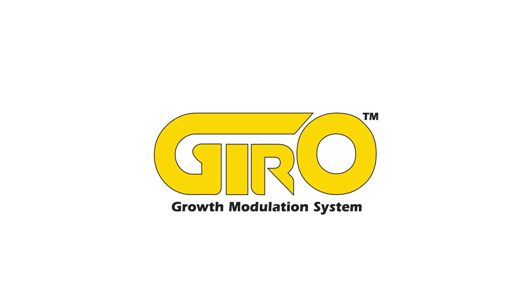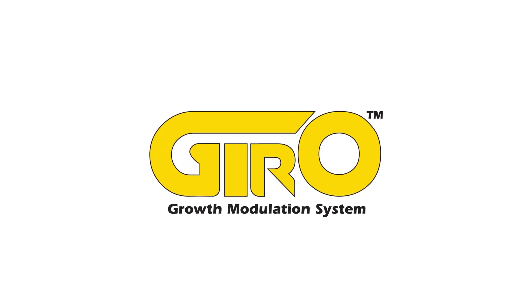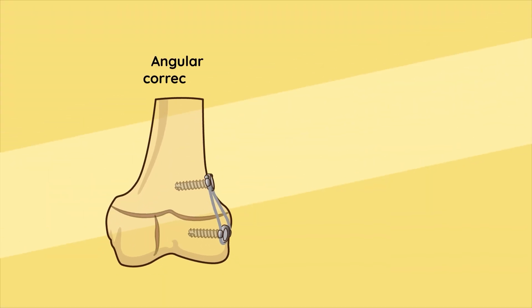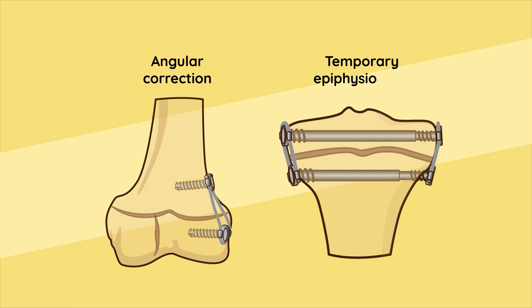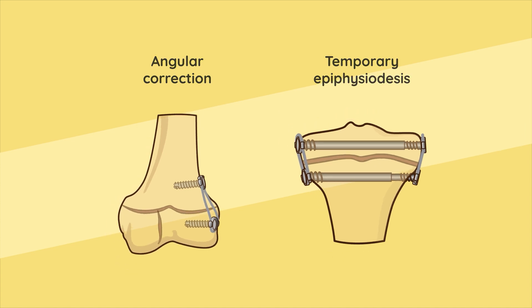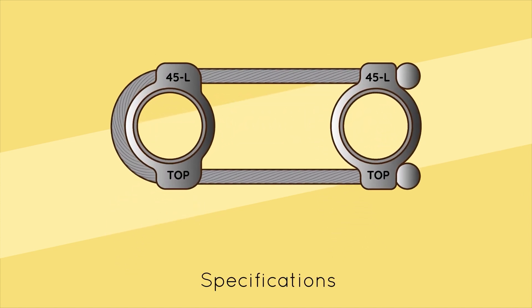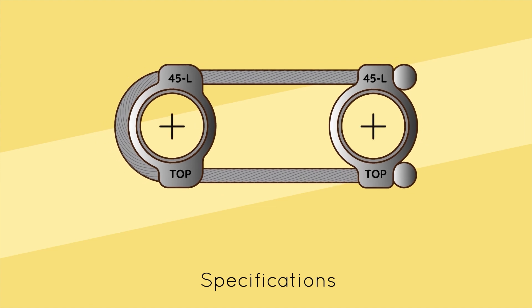The Gyro Growth Modulation System is a unique tether device used for guided growth and deformity correction. Specifications: The implants are manufactured in medical grade stainless steel. The gyro is offered in lengths ranging from